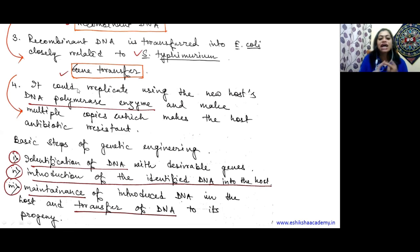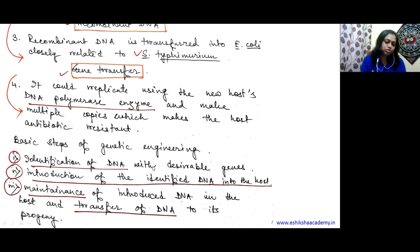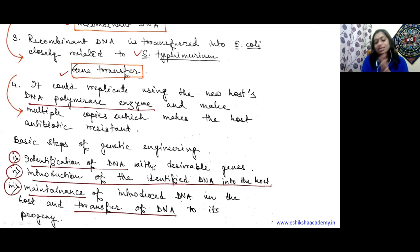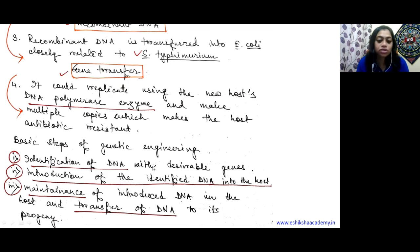So what are the basic steps of genetic engineering? First: identification of DNA with desirable genes - we must identify which genes, which character to incorporate. Second: introduction of the identified DNA into the host - we incorporate our gene of interest by making it recombinant. Third, and the main thing: maintenance of the introduced DNA in the host and transfer of DNA towards progeny. We must maintain it - that's why we use closely related hosts like E. coli and Salmonella typhimurium. If they are too distant, the recombinant DNA will be lost after some generations.